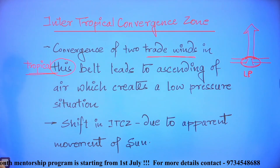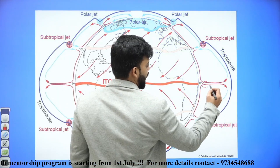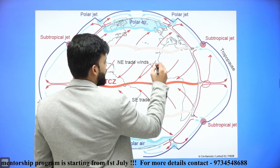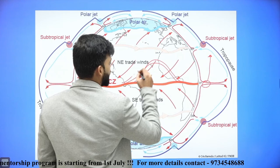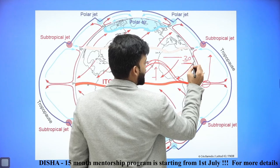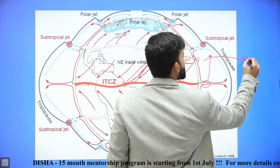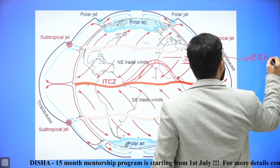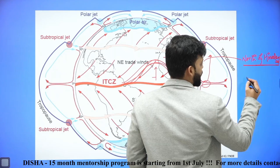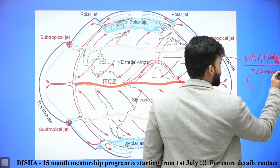Also, the ITCZ shifts due to the apparent movement of the sun. When the sun is above the equator, the ITCZ will be around the equator. But when the sun moves northward towards the Tropic of Cancer, this ITCZ will also move northward, up to around 30 degrees north. In the case of India, the ITCZ moves north of the Himalayas during summer, prior to the monsoon.